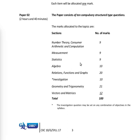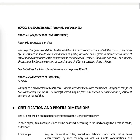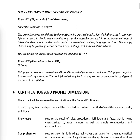I notice that Sets has been left out of section 2. Relations, Functions and Graphs carries 20 marks, and Geometry and Trigonometry also carries 20 marks, while the others carry around 9, 10, and 12 marks. So there's a lot of emphasis on Relations Functions and Graphs and Geometry and Trigonometry. I'll look at the school-based assessment separately next time.